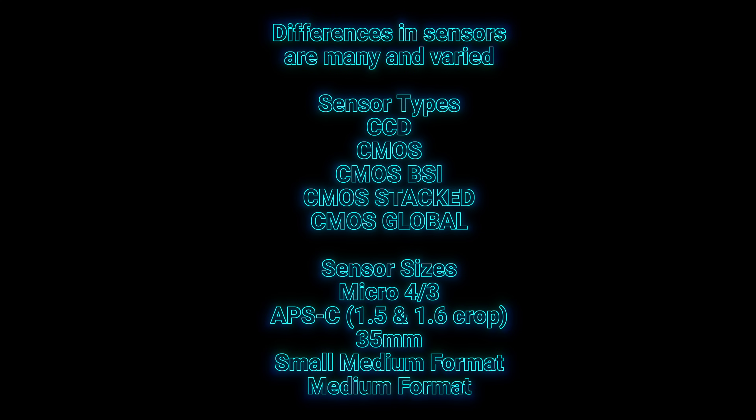On top of that, we have Micro Four Thirds, APS-C — which comes in Canon size and Nikon and Sony size — then 35mm sensors, small-medium format, and medium format. They all have different noise performance.